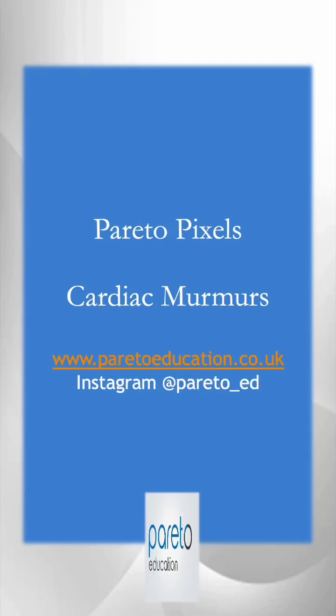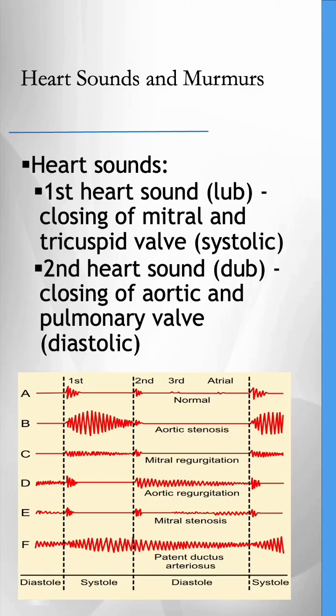Welcome to another Pareto Pixel, and today we're going to crack through cardiac murmurs. When we're listening into murmurs we hear two main sounds. The first is the classic lub sound, which is the closure of the mitral and tricuspid valve at the start of the systolic phase. The second is the dub sound, which is the closure of the aortic and pulmonary valve at the end of the systolic phase and the start of the diastolic phase.